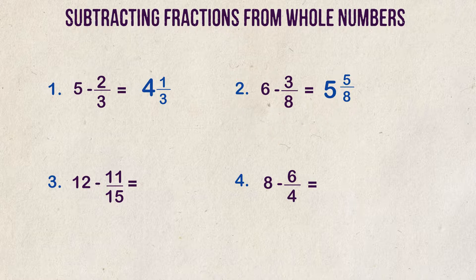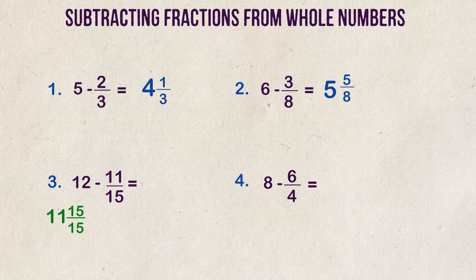Example 3. What is 12 minus 11 fifteenths? For this example, let's approach it a different way. Let's focus on the whole number of 12. What if we were to rewrite 12 as a mixed number? 12 can also be stated as 11 and 15 fifteenths, right? Because 15 over 15 is 1, which can be added to 11 to get 12.